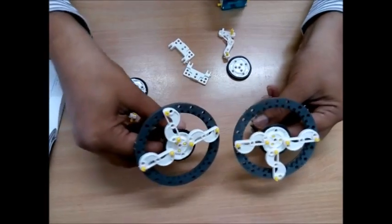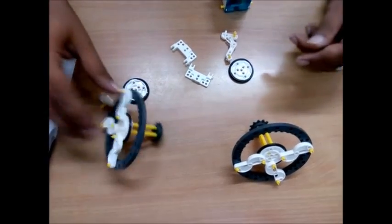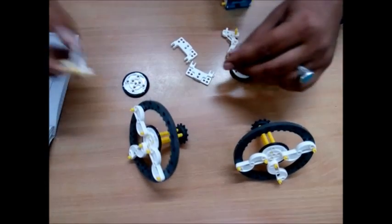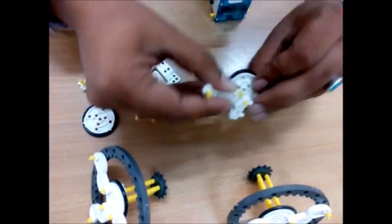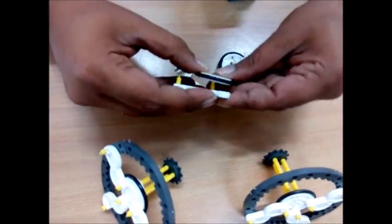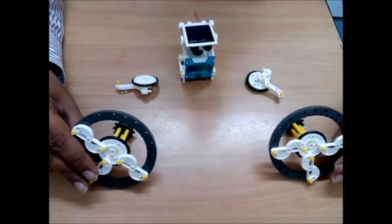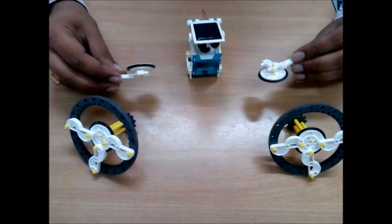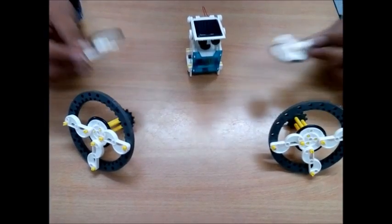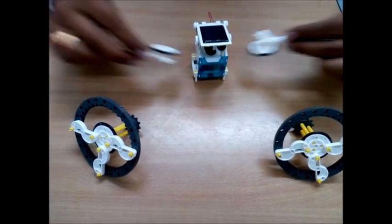The main wheels are ready for the wheel board. Now we'll assemble the rear wheels or tailing wheels. We'll assemble all four wheels with the main body of the board.